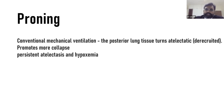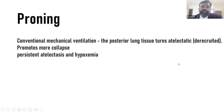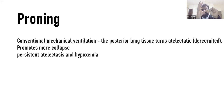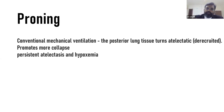Proning has gained enormous attention since COVID-19. It is one of the best maneuvers for oxygenation failure. With conventional mechanical ventilation in a sick patient, posterior lung tissue becomes atelectatic, creating a vicious cycle — one area of derecruitment leads to further derecruitment, resulting in persistent atelectasis, volume loss, reduced surface area, and hypoxemia.